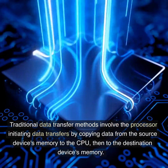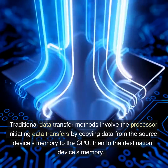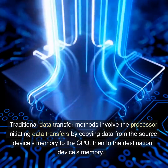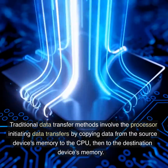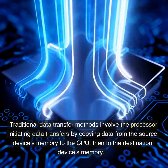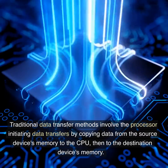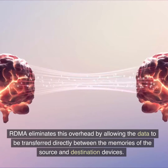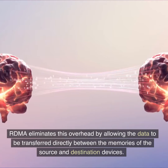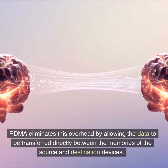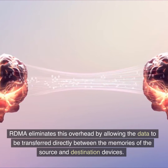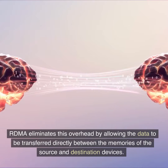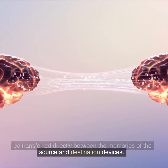Traditional data transfer methods involve the processor initiating data transfers by copying data from the source device's memory to the CPU, then to the destination device's memory. RDMA eliminates this overhead by allowing the data to be transferred directly between the memories of the source and destination devices.